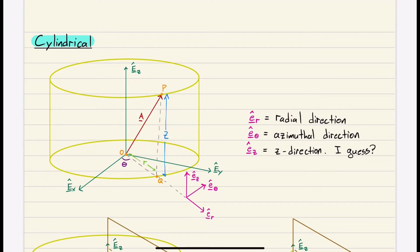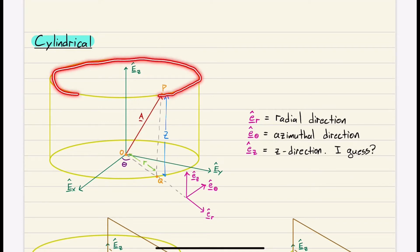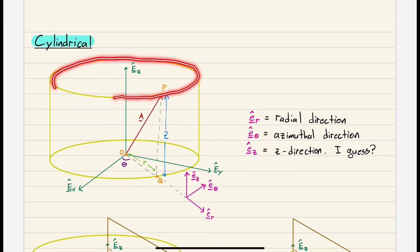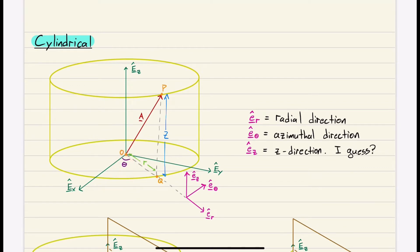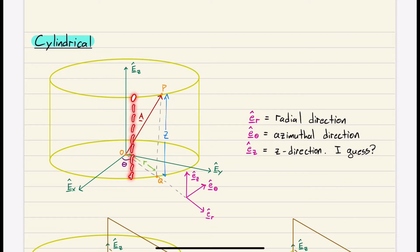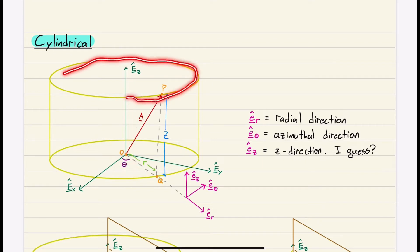Our vector A points to point P, which lies on the top edge of our cylinder. With the cylinder defined by R and Z, we still need to define where on that top edge point P is — and we do that with angle theta. If theta equals zero, point P would be right in line with EX. Theta tells you where on the top edge of our cylinder we are.